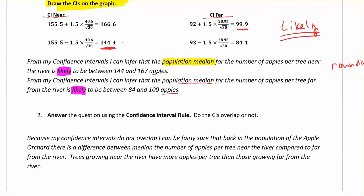Coming back to my rule here, because my confidence intervals do not overlap I can be fairly sure, hugely important as well because this is again expressing our uncertainty that we're not 100% sure but it's likely, we're fairly sure that back in the population of the apple orchard there is a difference between the median number of apples per tree near the river compared to far from the river. The trees growing near the river have more apples than trees growing far from the river.